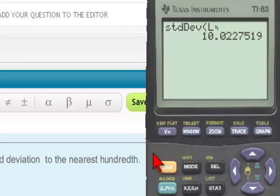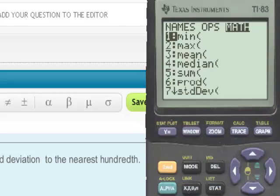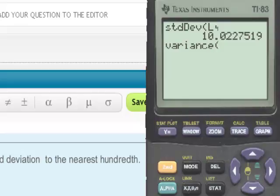Still another way is to go to the yellow second key, the list button, the math menu. Select the number 8 which is the variance. We'll find the variance for list 4 again using the yellow second key and the number 4 giving us list 4. Hit enter.